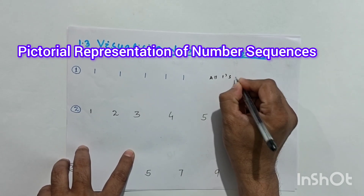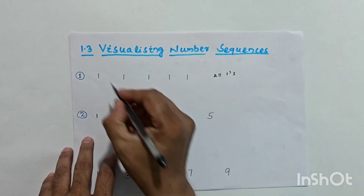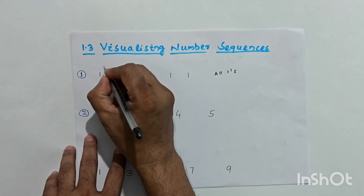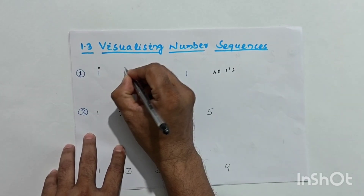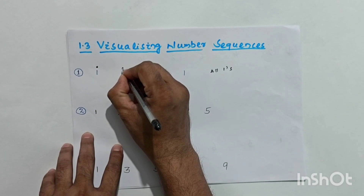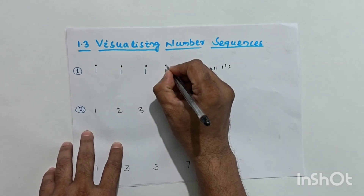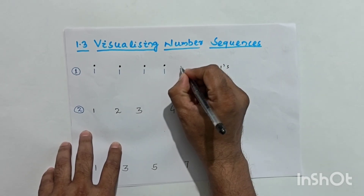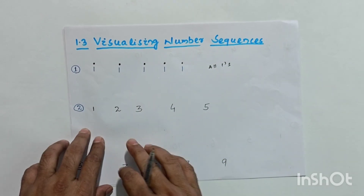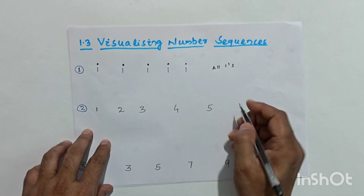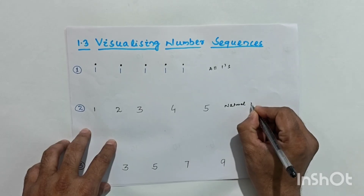For the all-ones sequence, we use dots. We draw one dot, then another one dot, then another one dot, and so on — each position has exactly one dot. The next sequence is natural numbers.